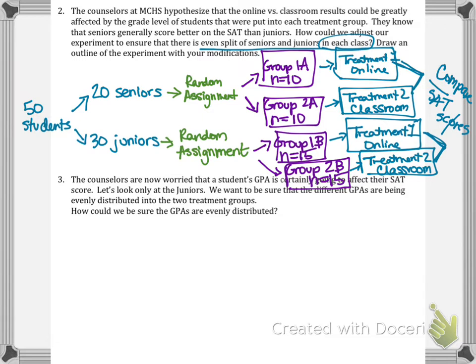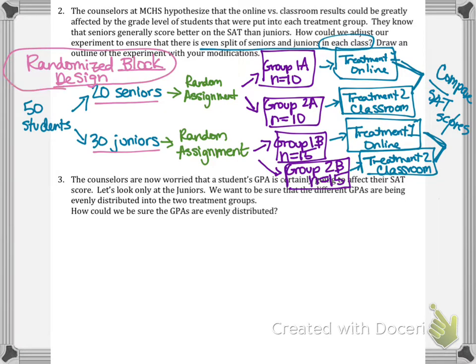So maybe I see that seniors did better in the online format and juniors also did better in the online format. Now I can really say this was because of the online format, not because I had more seniors or more juniors in a particular grouping. We call this a randomized block design — we broke students into blocks first to ensure an equal number of juniors and seniors received both treatments, because grade level can influence the outcome.